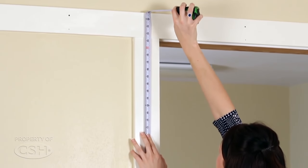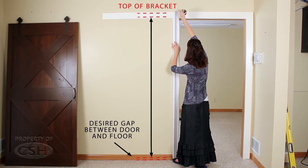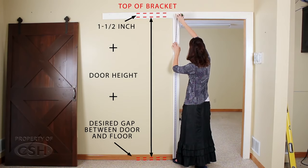Measure for the rail bracket installation. Location for the top of the bracket is desired gap between door and floor, typically about a quarter inch, plus door height, plus one and a half inches. Mark this location on the door frame or wall.